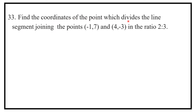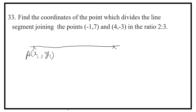Find the coordinates of the point which divides the line segment joining the points in ratio 2 is to 3. Here is your line segment — this is A(x1, y1), this is B(x2, y2), divided by a point P(x, y) in the ratio m1 is to m2.